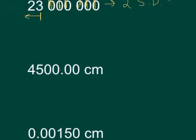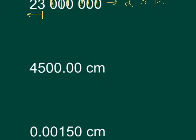Now we look at 4500 but with a decimal place present. Instead of starting on the right, we start on the left and go from the first non-zero digit — which is the four. That number and everything to the right is significant, so we have one, two, three, four, five, six — this is in fact six significant digits.